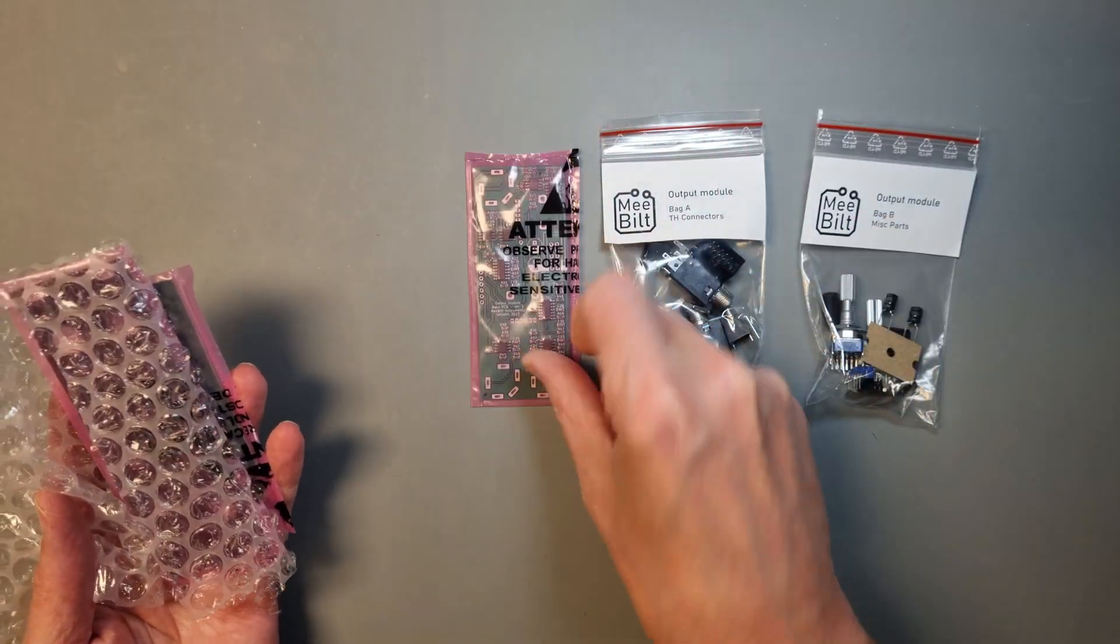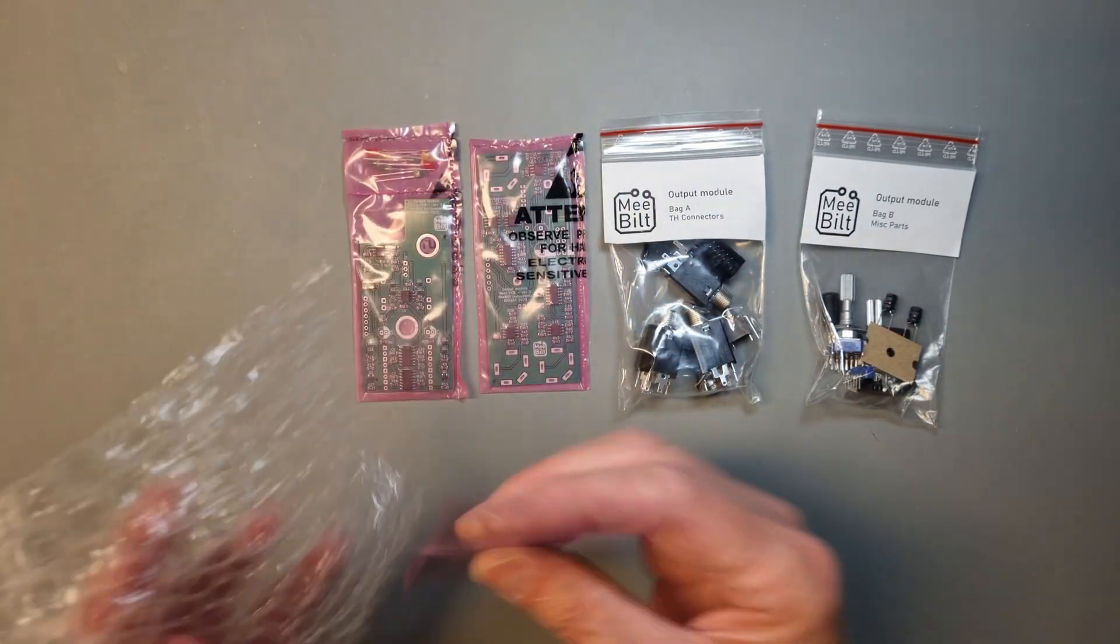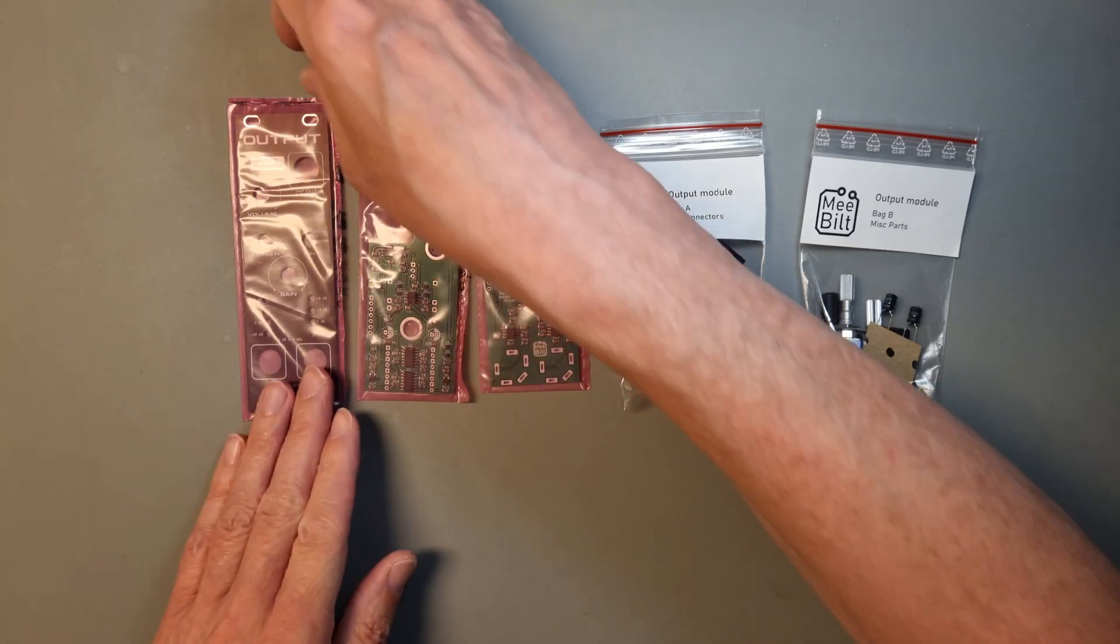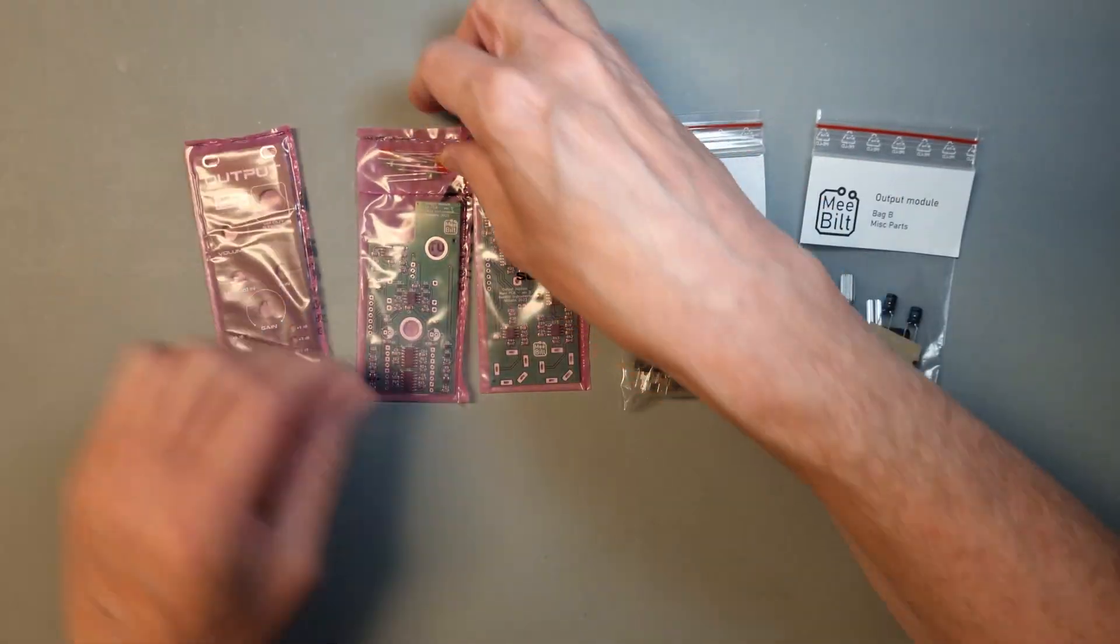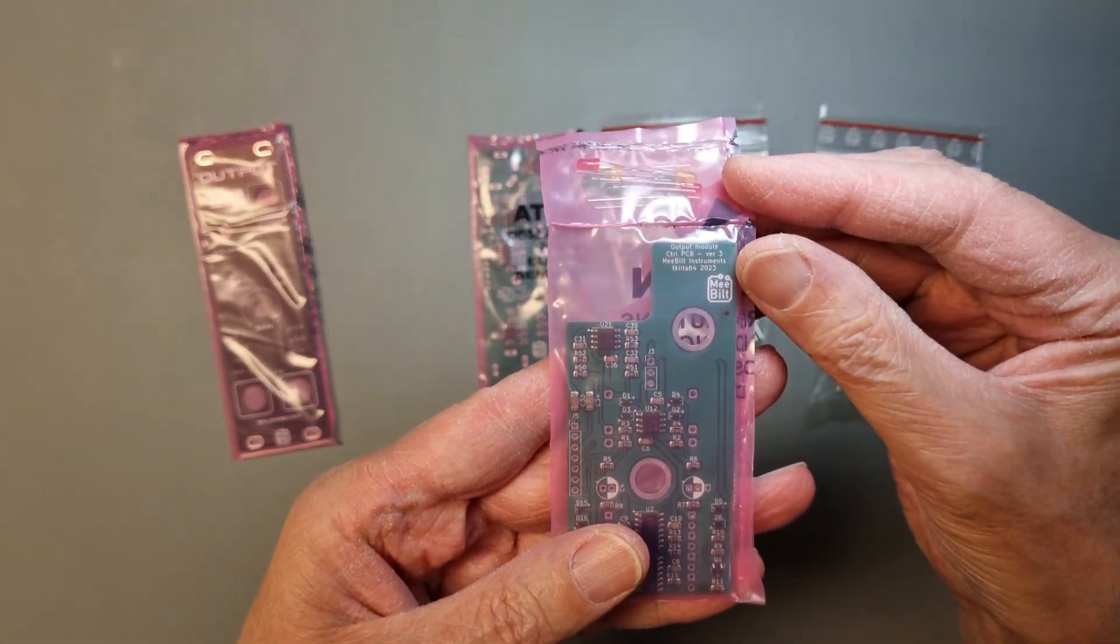The kit consists of two PCBs with pre-soldered SMT components, a black PCB panel, two bags of through-hole components, organized as one bag with the connectors and one bag with the rest of the components. Please note that the power cable and front panel screws are not included in the kit.